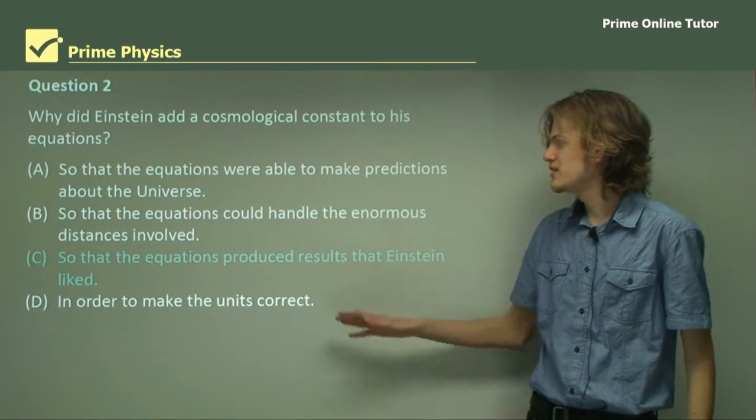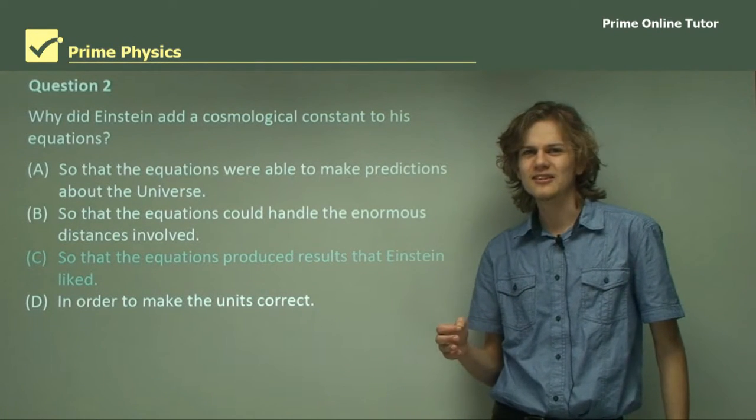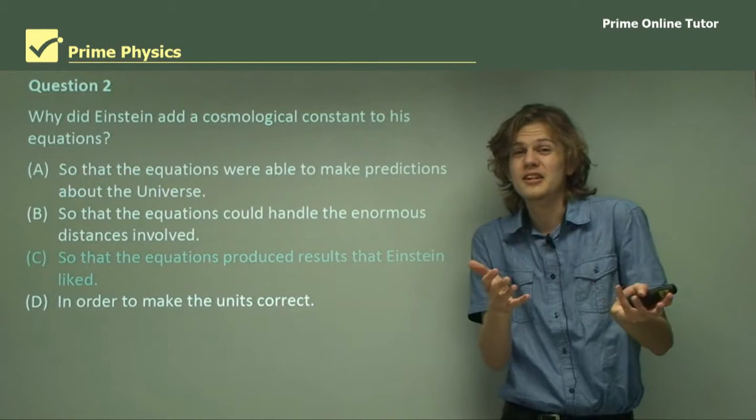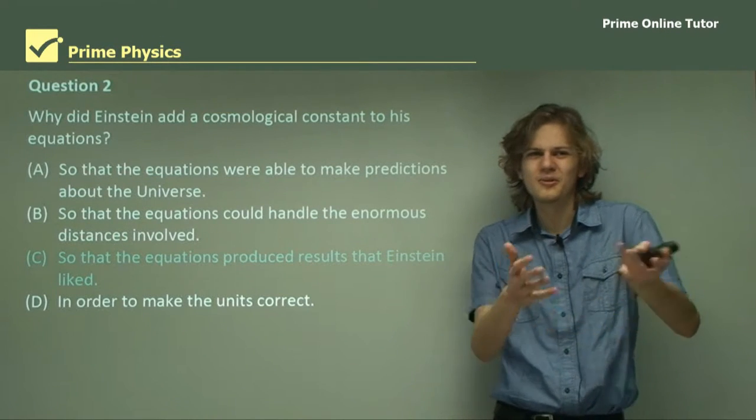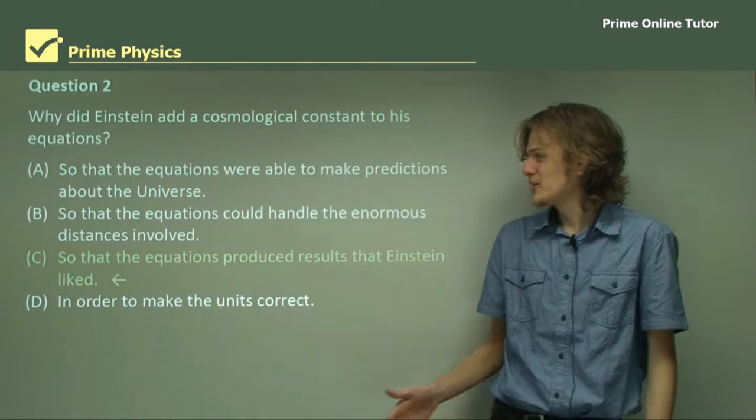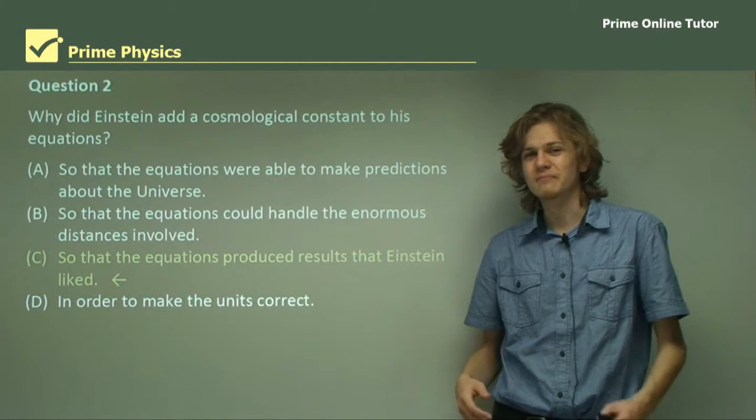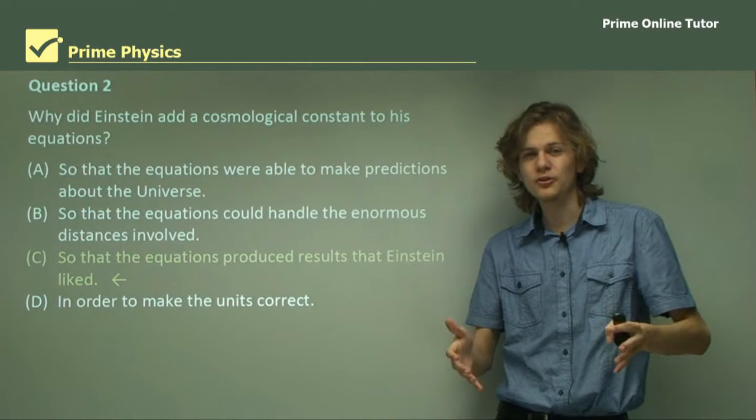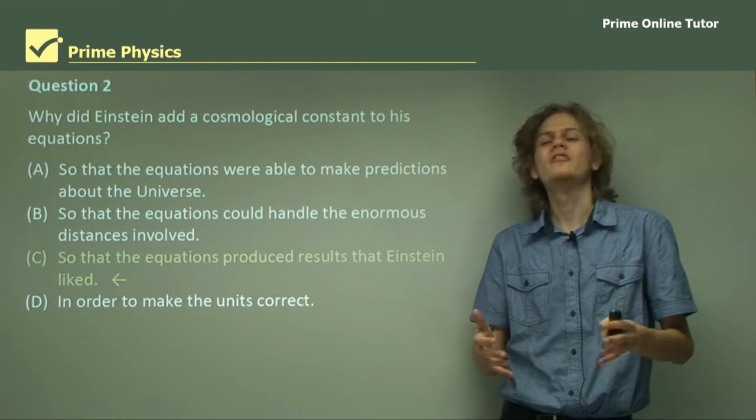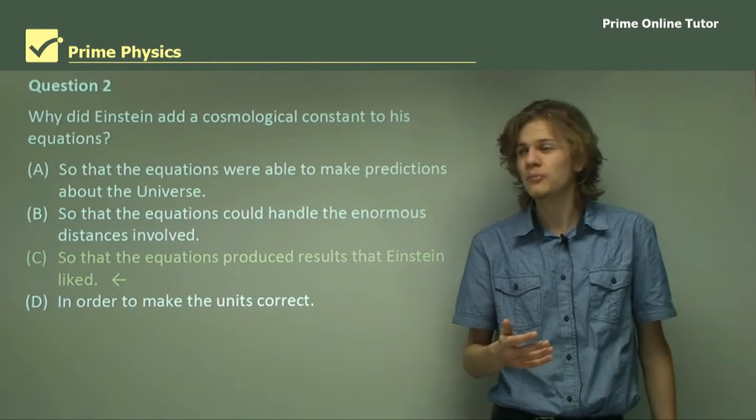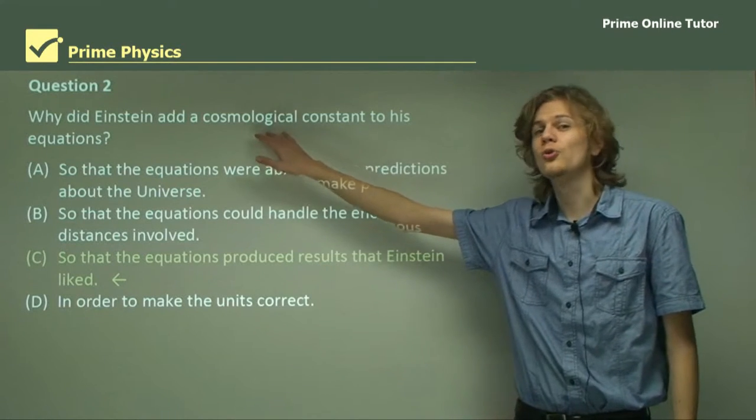Our final option then is C, so the equations produced results that Einstein liked. This doesn't really seem like a very scientific answer, because I mean, who changes their equations to change their results? But in fact, we can see that this was the correct answer. Einstein basically didn't like the idea of an expanding or a contracting universe, so he changed his equations so they would predict an unchanging universe. And he did that by sticking a cosmological constant into them.